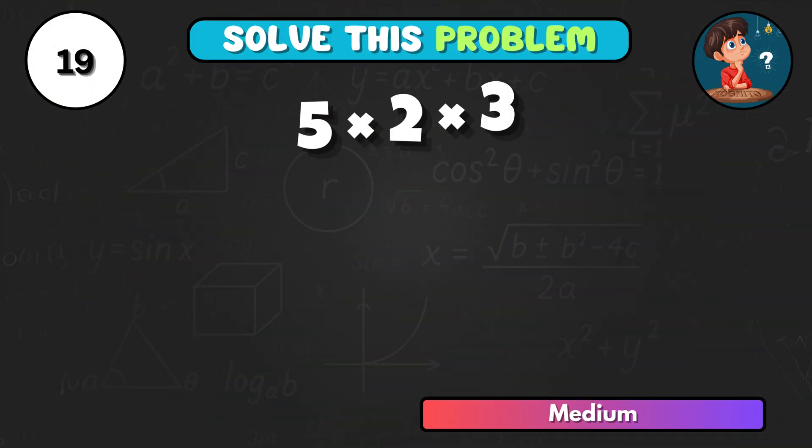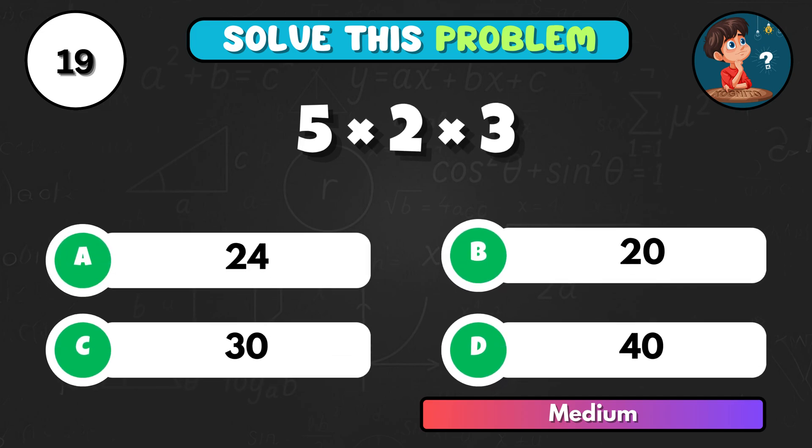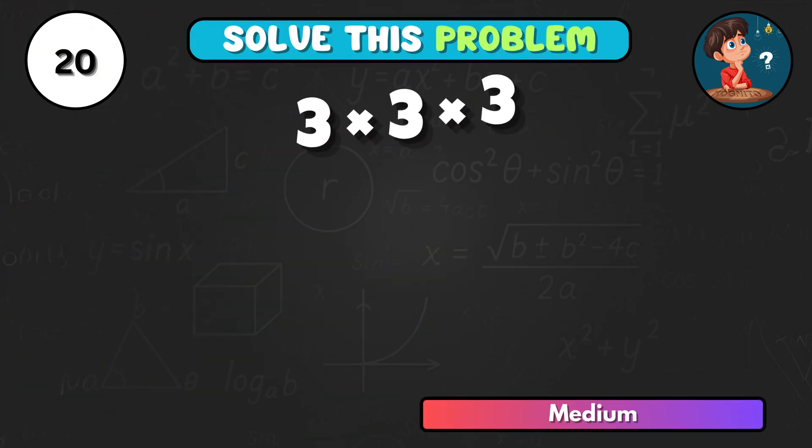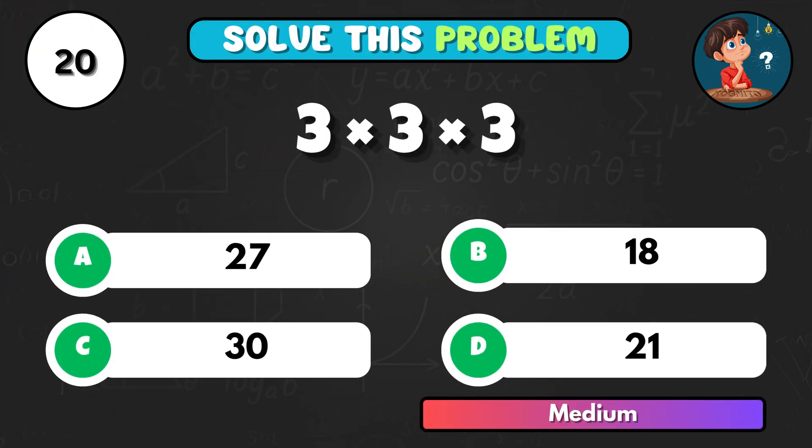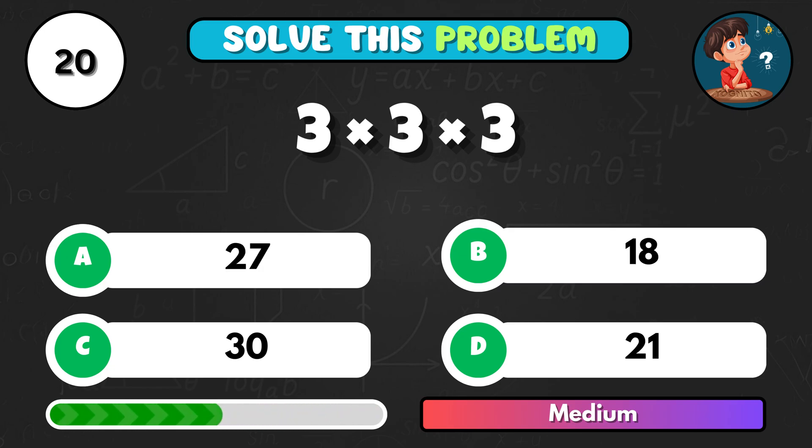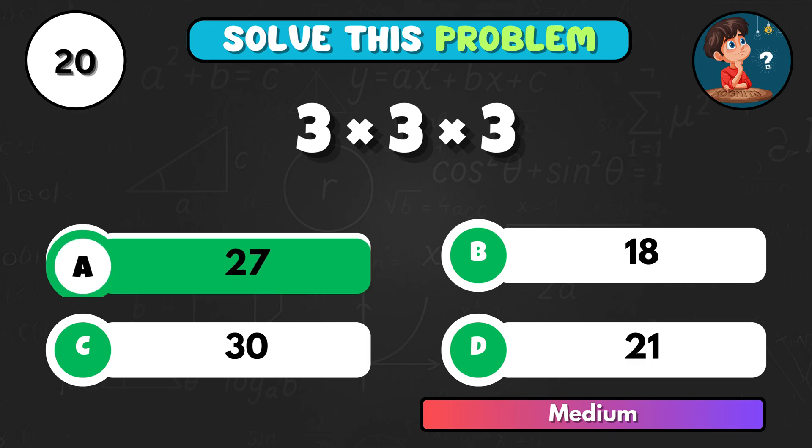Find this one. 5 times 2 times 3. What's your pick? That's C, 30. 3 times 3 times 3. Easy. It equals A, 27.